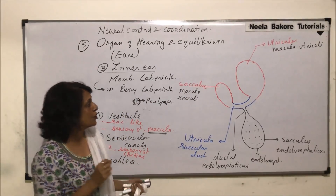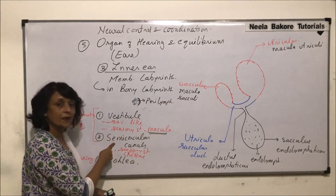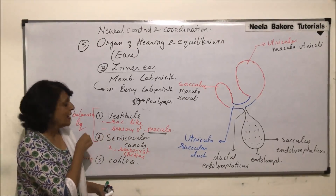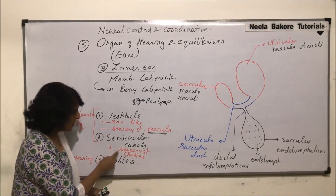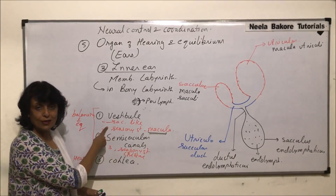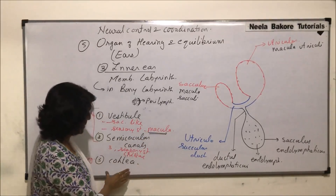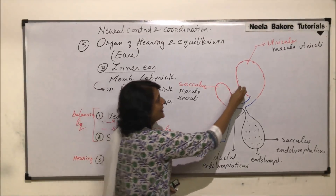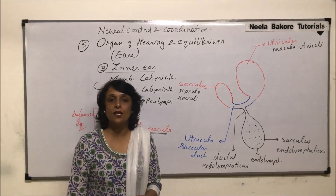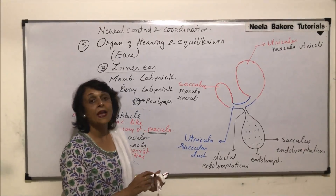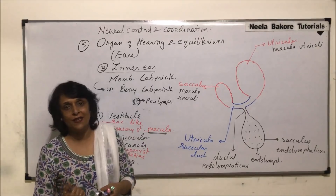Now coming to the semicircular canals, which arise from the utriculus. In the semicircular canals there is a sensory structure called crista, and in the vestibule the sensory structure is macula. Three semicircular canals are attached to the utriculus and they are perpendicular — at right angles to each other. According to their position they are termed as superior or anterior, posterior or inferior, and lateral.